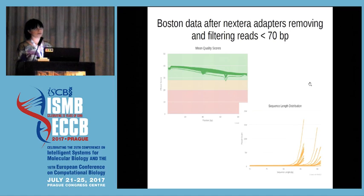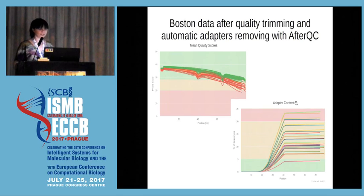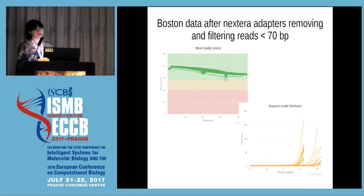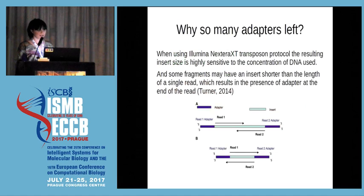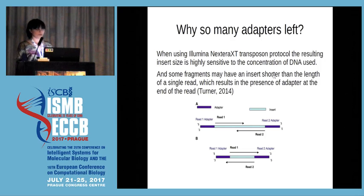We then used the AfterQC tool, which is a very nice one — it does a lot of things like checking for bubble effects and so on. We had to apply an additional step to remove the adapters, and only after that did the data look better. We had a reasonable sequence length distribution. If you are going to map to different genomes you will just get rid of short reads, but you also lose information. If you cut some adapters, you still get reads with normal lengths higher than 70 base pairs, but if you are looking for specific sequences — like some kind of markers — you would really want to get rid of adapters. This is a basic step that should be performed in any kind of analysis.